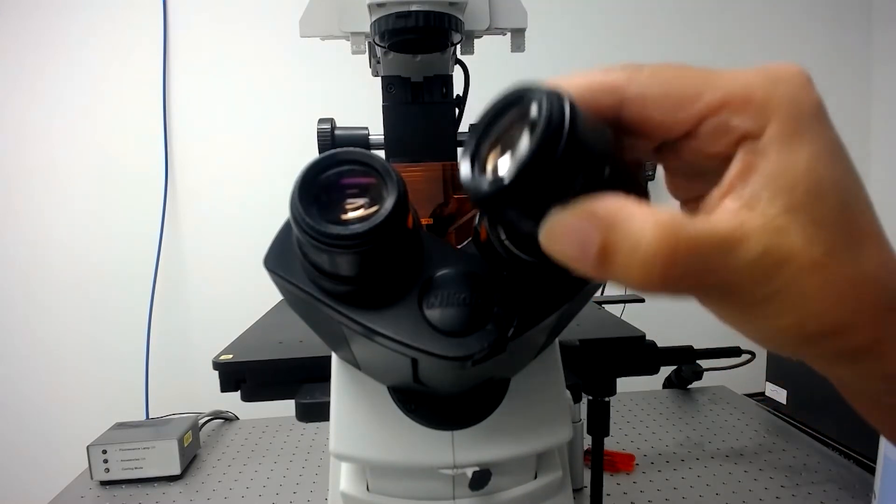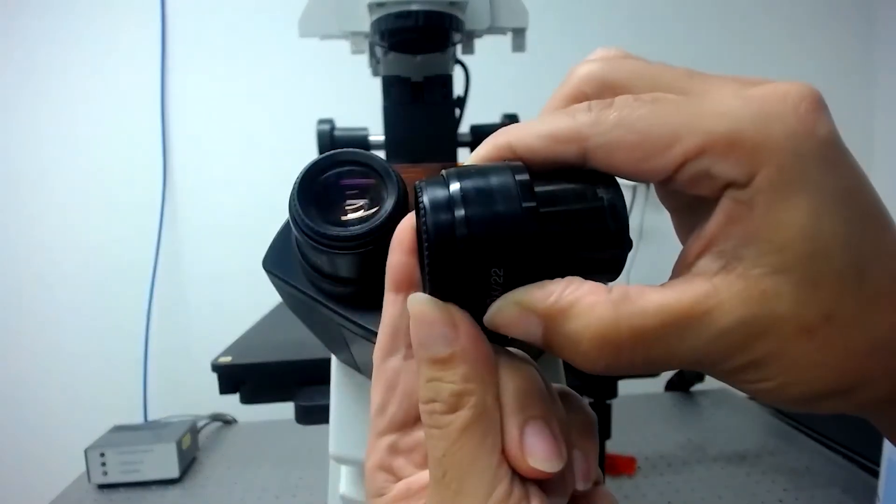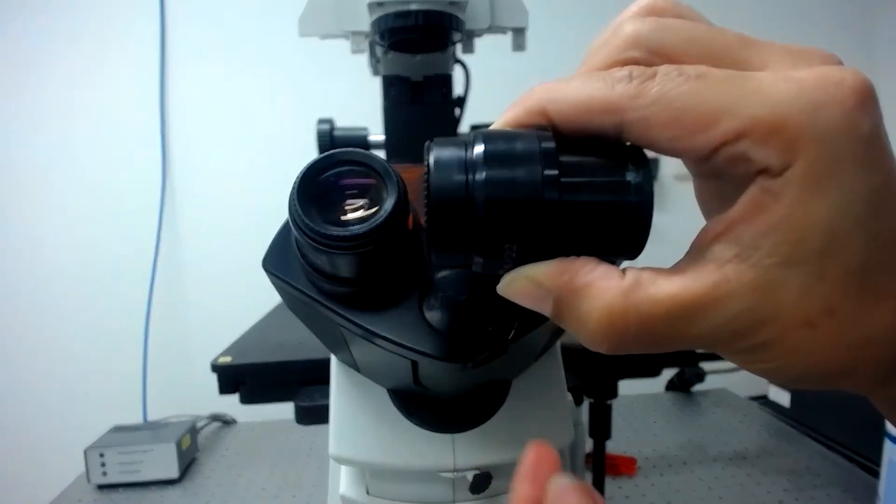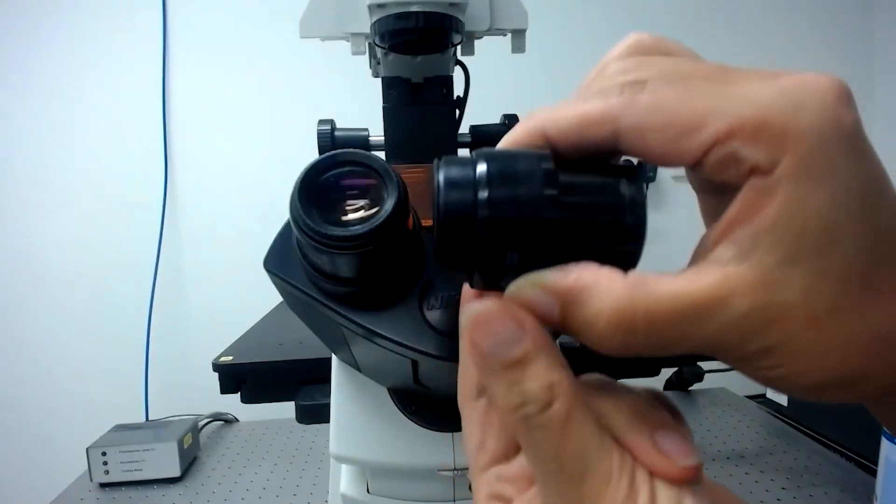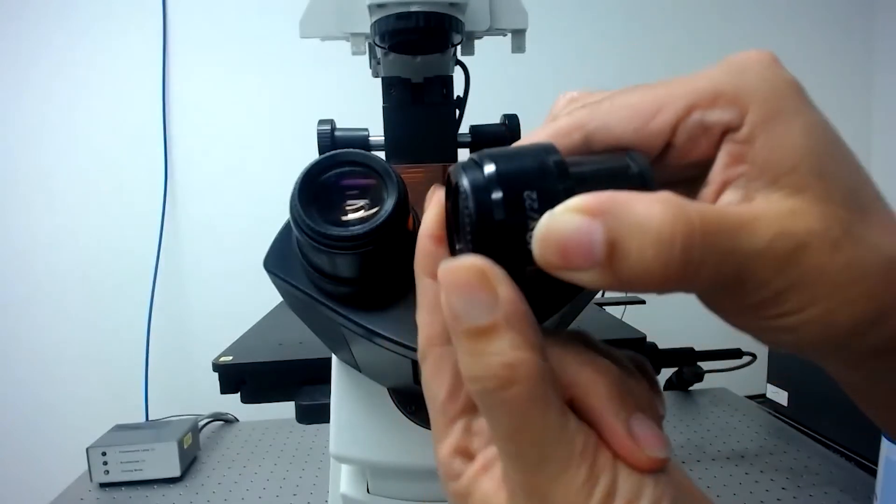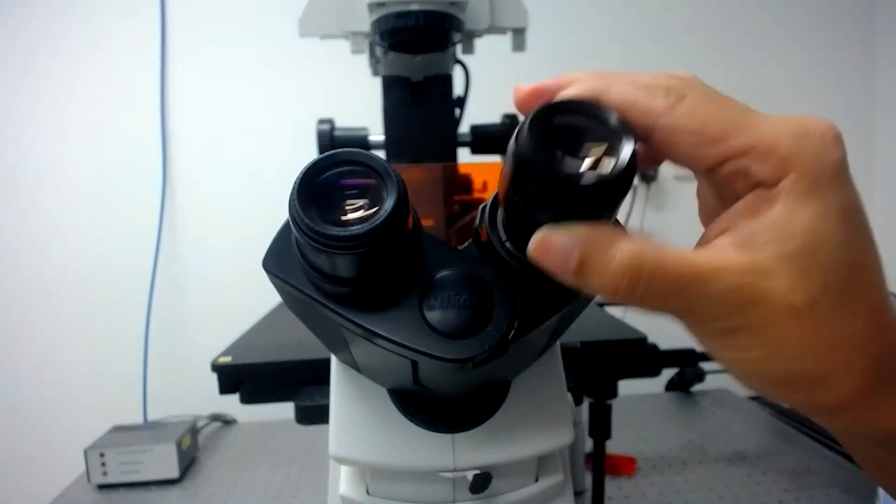Olympus and Zeiss generally use numbers to identify the diopter setting. However, Nikon utilizes an engraved ring to mark the zero position. Rotate the inner and outer housing until the ring is only just showing.